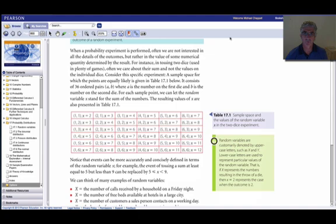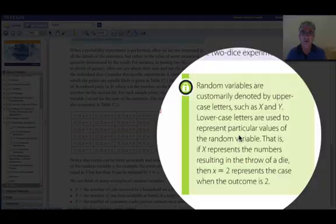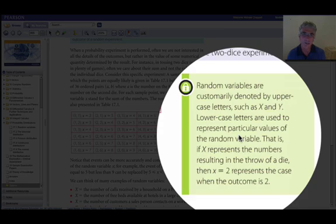Now, some notation. We call the variable that we are interested in our random variable. We just give that the symbol capital X, big X. So big X is like a label or the name for it, but it stands for any variable we like.